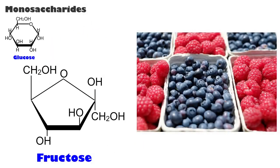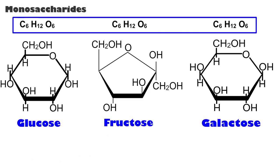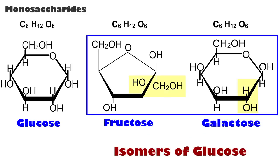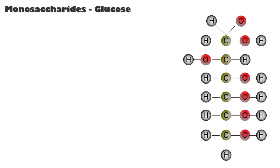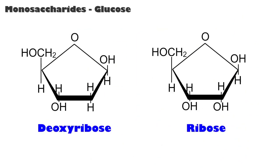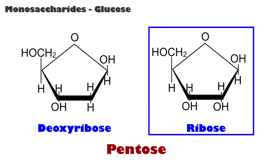Fructose, the sugar that sweetens fruit, and galactose, the sugar found in milk, have the same chemical formula as glucose and are therefore isomers of glucose. Isomers have the same composition but have a different arrangement of their atoms and properties. Glucose can have a straight chain of carbon atoms; however, it's more common to find them in a ring structure. Two other 5-carbon sugars, or monosaccharides, called pentose, used in nucleic acid synthesis are deoxyribose and ribose.